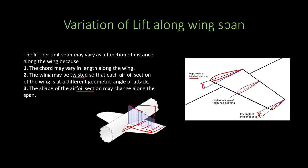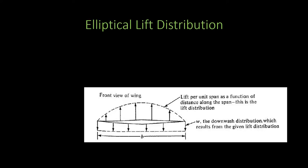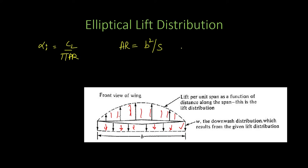So we have three reasons for variation of lift: the chord length may vary, the wing may be twisted (varying angle of incidence), and the airfoil shape may also vary. Since the lift is varying, the downwash will also vary accordingly. Let us assume a wing with elliptical lift distribution, as shown in this figure — the arrows show the elliptical lift distribution. In such a case we have constant, uniform downwash throughout the wingspan. From finite wing theory, for elliptical lift distribution, alpha_i = C_L / (π · AR), where AR is the aspect ratio defined as b² / S, with b being the wingspan and S the wing area.